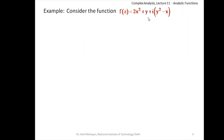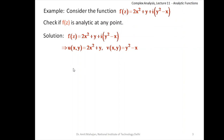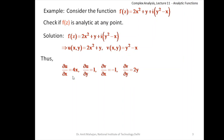Let us take another example. Consider the function f(z) = 2x² + y + i(y² − x). Here f(z) = u + iv where u = 2x² + y and v = y² − x. Let us check whether f(z) is analytic at any point. We check whether the Cauchy-Riemann equations are satisfied. We calculate: the partial derivative of u with respect to x is 4x, the partial derivative of u with respect to y is 1, the partial derivative of v with respect to x is −1, and the partial derivative of v with respect to y is 2y.